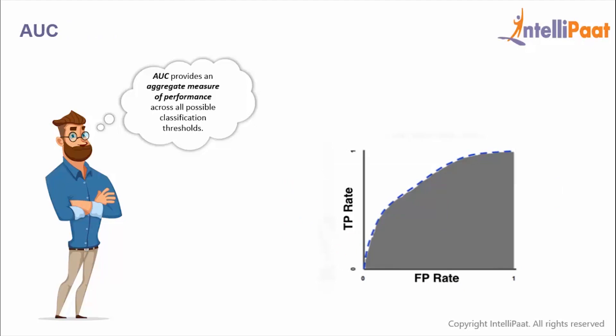Then we have AUC. AUC measures the entire two-dimensional area underneath the entire ROC curve. It's an aggregate measure of performance across all possible classification thresholds and it ranges in value from 0 to 1. A model whose predictions are 100% wrong has an AUC of 0, and a model whose predictions are 100% correct has an AUC of 1.